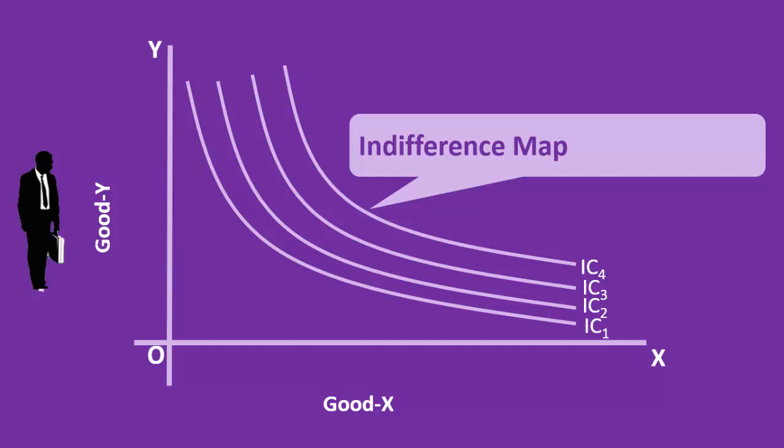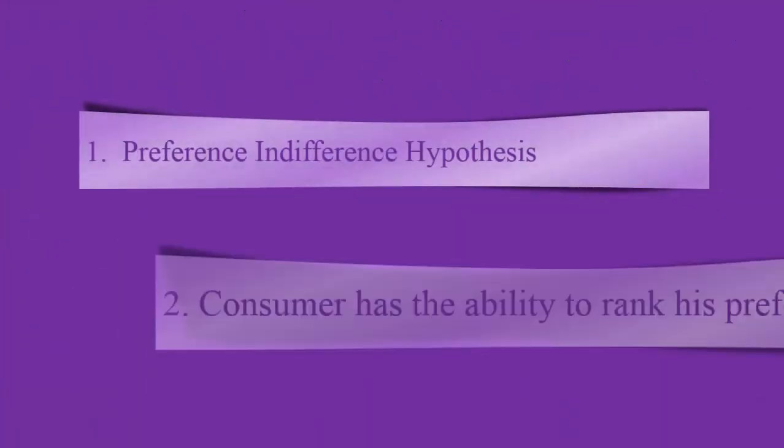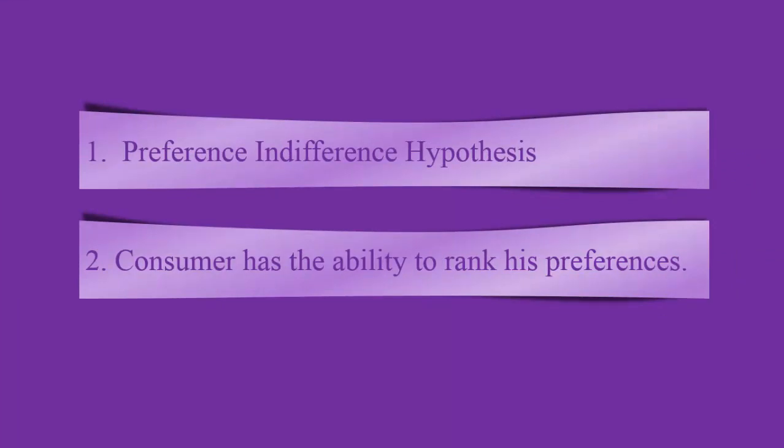The two assumptions that help us to understand the indifference map are: 1. Preference Indifference Hypothesis and 2. Consumer has the ability to rank his preferences.